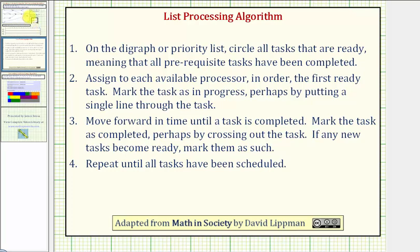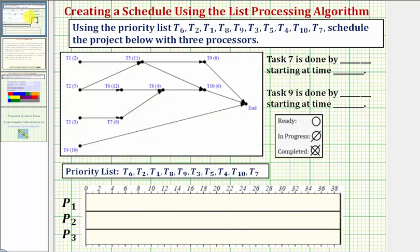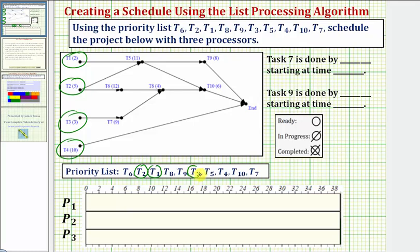So going back to our problem, we first want to circle the ready tasks, which would be task one, task two, task three, and task four, since none of these tasks have any prerequisite tasks. So we'll circle these on the priority list as well, marking task one, task two, task three, and task four.